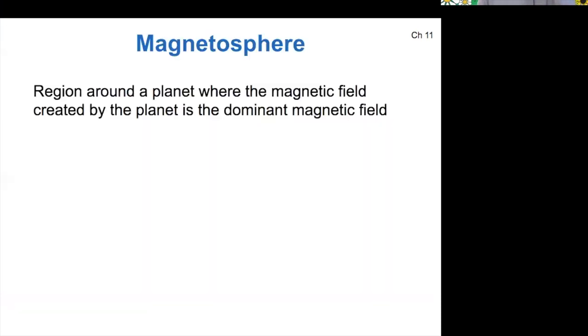So what is a magnetosphere? It's a region around a planet where the magnetic field created by the planet is the dominant magnetic field.